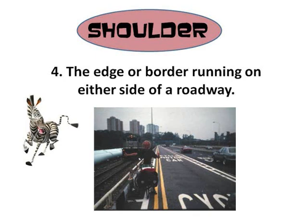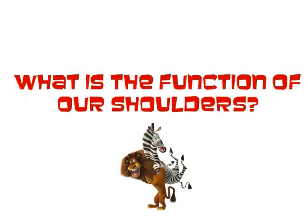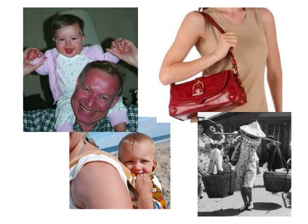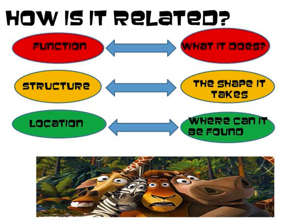Let's go deeper and find out in what way the meanings of shoulder are related. Let's figure it out. If you say they are related in terms of structure — thumbs up for you. The meanings refer to the shape it takes. And if you also say that they are related in terms of location — another thumbs up for you — because it is also related to where it can be found, which is at the side.